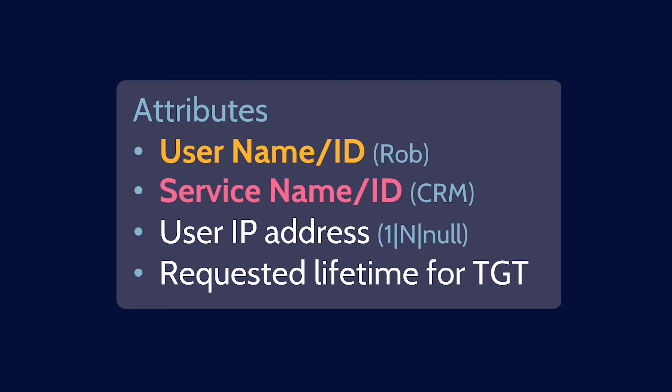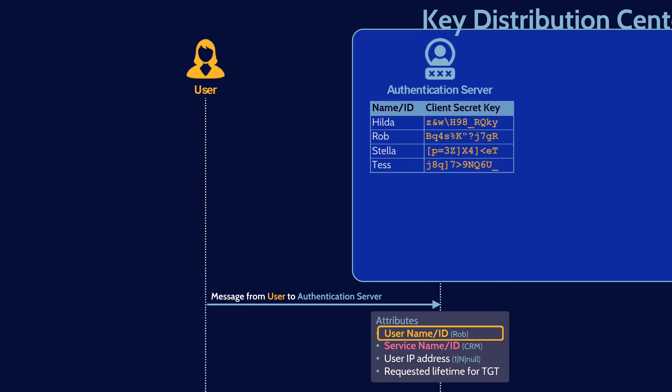Users would typically like a ticket that has an infinite lifetime so they never have to authenticate again, but that's not a super great idea from a security perspective, so Kerberos can just ignore what the user asks for. Once the user has their first message ready, they send it over to the authentication server. The first thing the authentication server does is look at the user ID in the message. The AS, being part of the KDC, has a list of all the users and their secret keys, so it checks that the user ID is in the list of users in the KDC and, if so, grabs a copy of that user's secret client key.